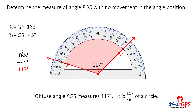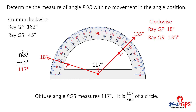But what if the tick mark values are read from zero degrees to 180 degrees in a clockwise direction? Will subtraction still identify the angle measure? In this case, ray QP passes through 18 degrees and ray QR passes through 135 degrees. If we subtract, the difference is 117 degrees. The process will work with either set of values.